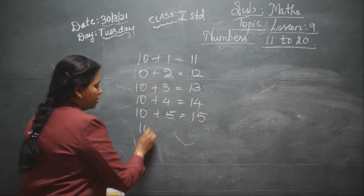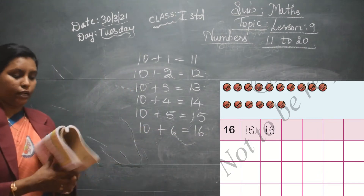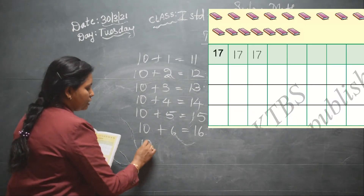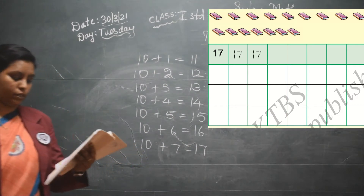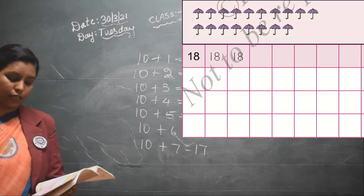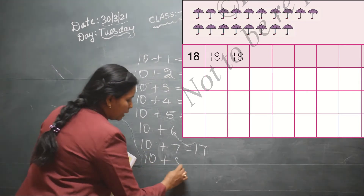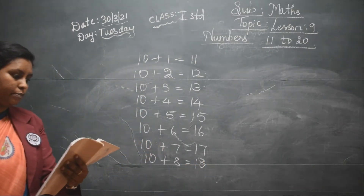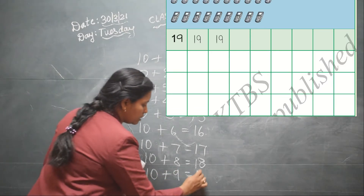Below they have given you the picture of balls: 10 plus 6 is equal to 16. On the next page they have given you pictures of books — 10 books and 7 books will give you 17 books. Below that they have given you a picture of umbrellas: 10 plus 8 is equal to 18. On the next page they have given you a picture of a mobile: 10 plus 9 is equal to 19.